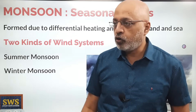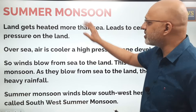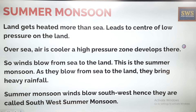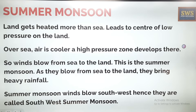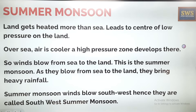During summer monsoons, the land gets heated more than the sea. That leads to a center of low pressure on the land. Over the sea, the air is cooler, so a high pressure zone develops there. So the sea has high pressure and the land has low pressure, because during summer the land is getting more heat and the sea is comparatively cooler.